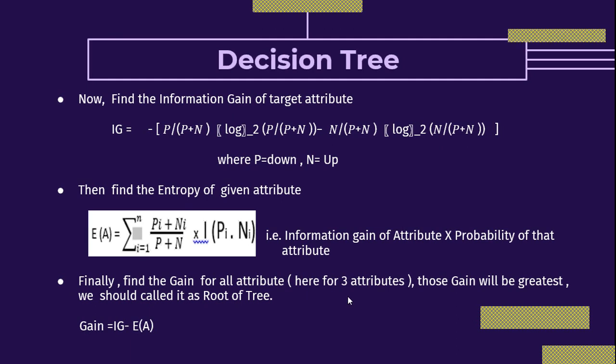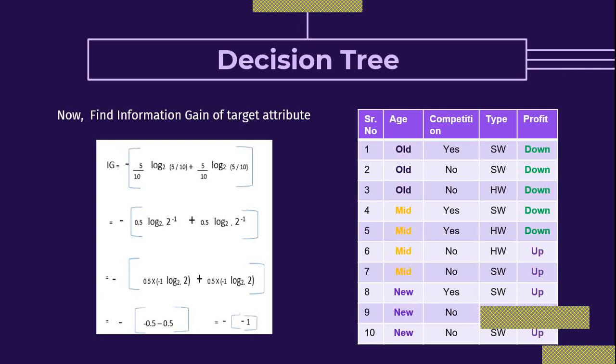Continuing with our previous data set: there are four attributes — age, competition, type, and profit — with profit as the target attribute. First we find the information gain of the target attribute profit. In the profit attribute there are 10 records: five up and five down.